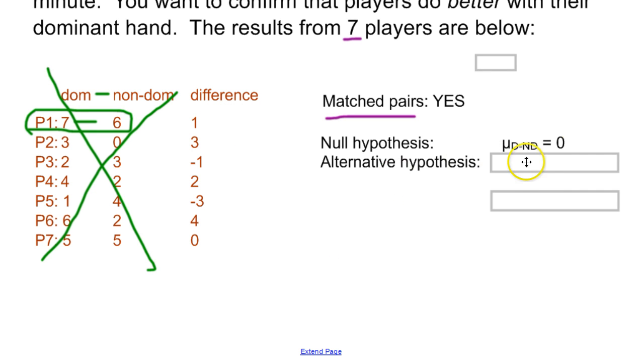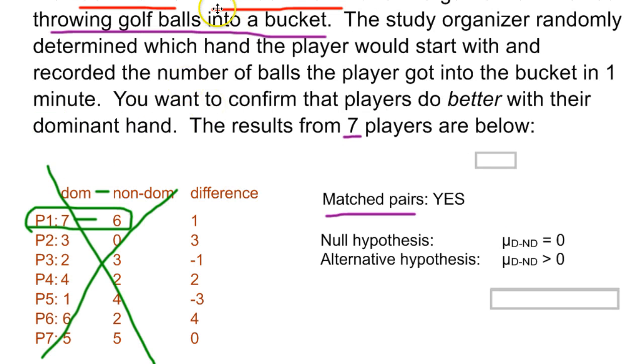The alternative hypothesis is same as the null, except greater than, less than, or not equal. The reason we go greater than, and not just non-equal here, is we want to confirm that players do better with their dominant hand. And so there's a built-in assumption that the dominant hand is going to do better, and expectation that that one's going to do better, so we can test specifically for that and make it more likely that our results are significant.